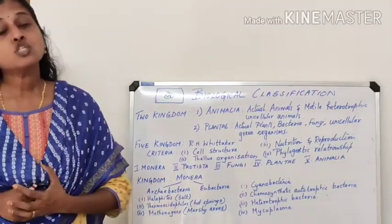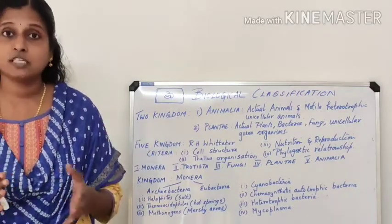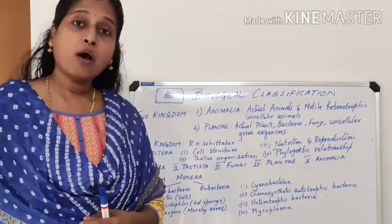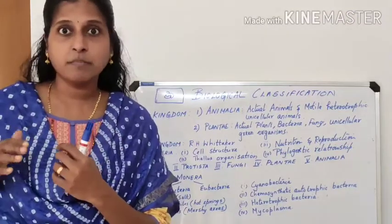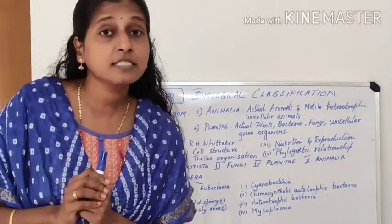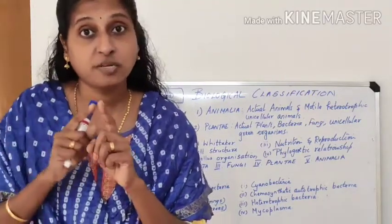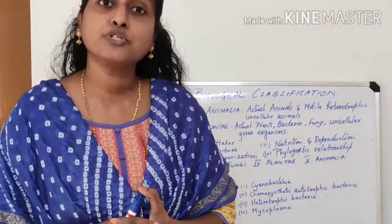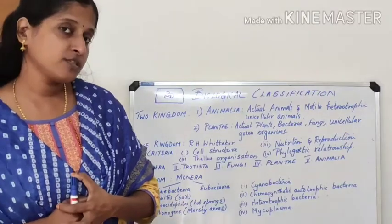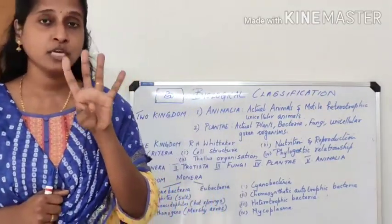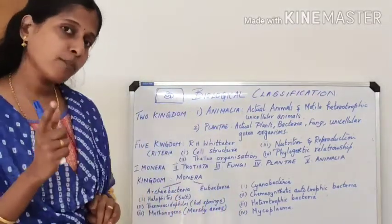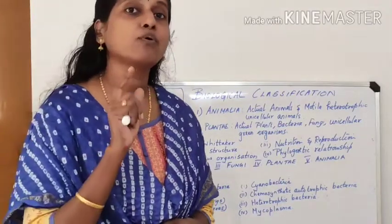The fourth criterion is phylogenetic relationship, meaning evolutionary history. We find out how the organism evolved and which organisms it resembles, so we can predict its ancestry. By studying the development of the embryo, we can learn the evolutionary history of that organism and use it for classification.